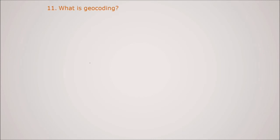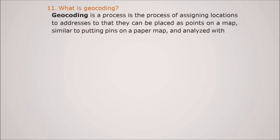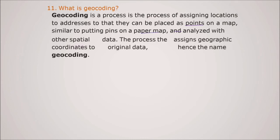What is geocoding? Geocoding is the process of assigning locations to addresses. Assigning the location to the addresses so that they can be placed as points on a map. Similar to putting points on a paper map and analyze with the other spatial data. So the process that assigns geographic contents to original data, that is why this name is geocoding.